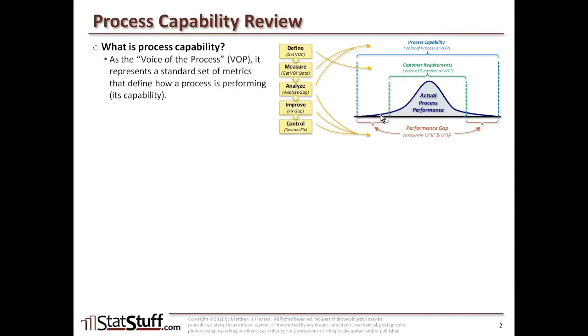In the analyze phase, we're defining what that process capability is and we have something to compare it to — the voice of the customer, the VOC. This helps us to understand the performance gap: how we're actually performing in the outer limits compared to what the customer wants or their requirements. These performance gaps reflect the opportunity where we might identify improvements to reduce variation in our process. Once we identify those, we identify the fixes to minimize those gaps between how we're actually performing and what the customer wants, eliminating defects and putting controls in place to sustain those improvements. This is how we follow through the entire DMAIC methodology.